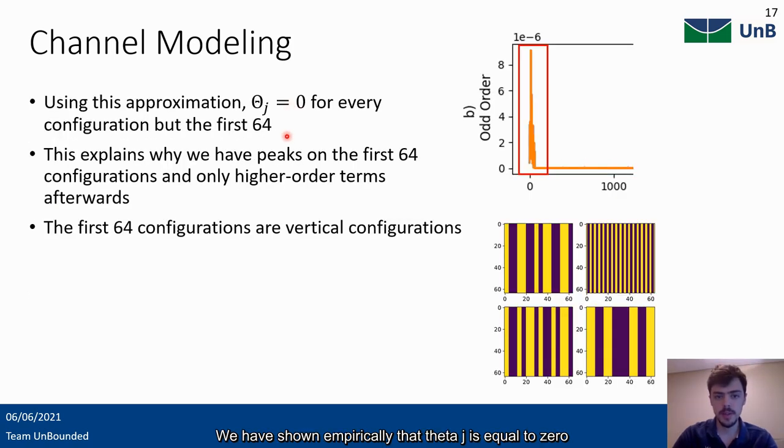We have shown empirically that theta j is equal to 0 for every configuration but the first 64. This explains why we have peaks on the first 64 configurations and only higher order terms afterwards. The first 64 configurations are vertical configurations, where each element in a subsurface is configured in the same way.